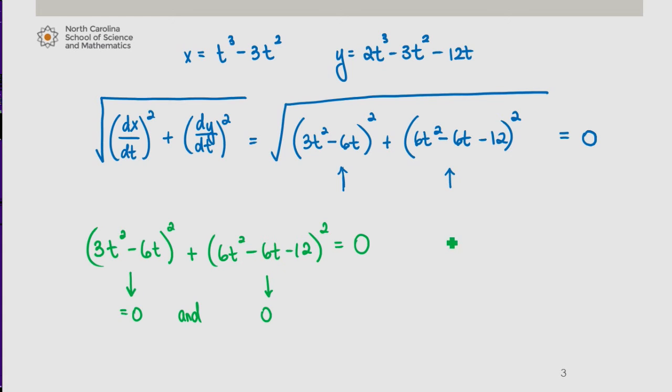In other words, we want to find a t value such that dx/dt and dy/dt are both equal to zero.